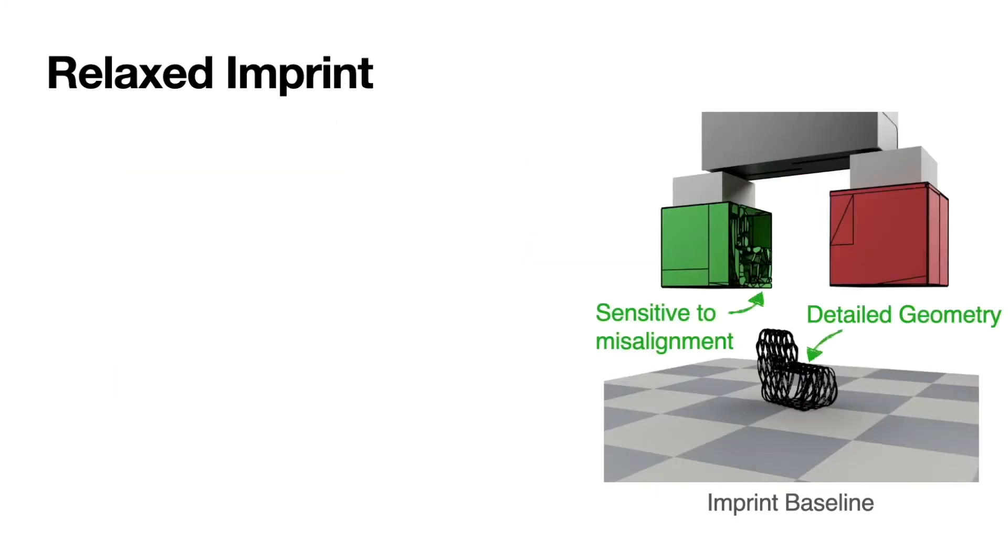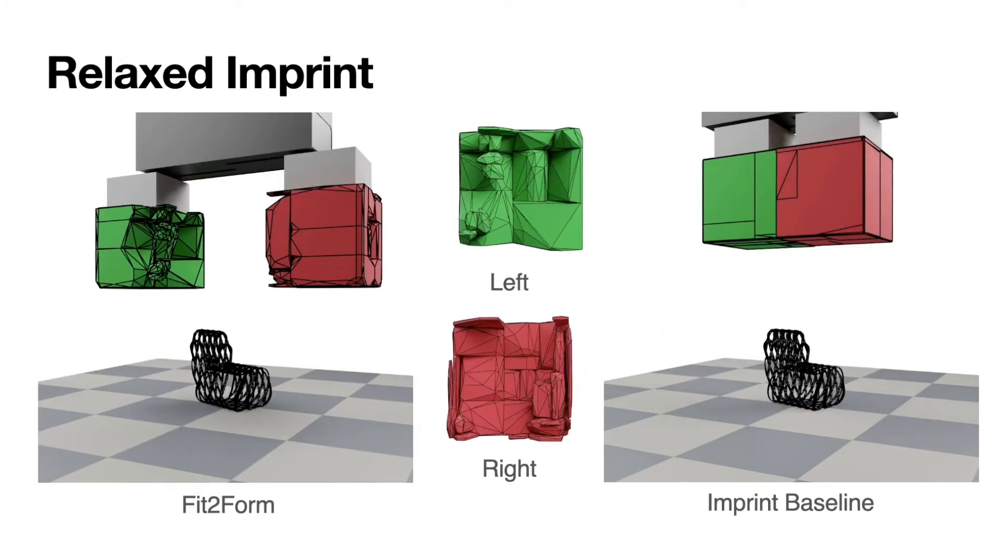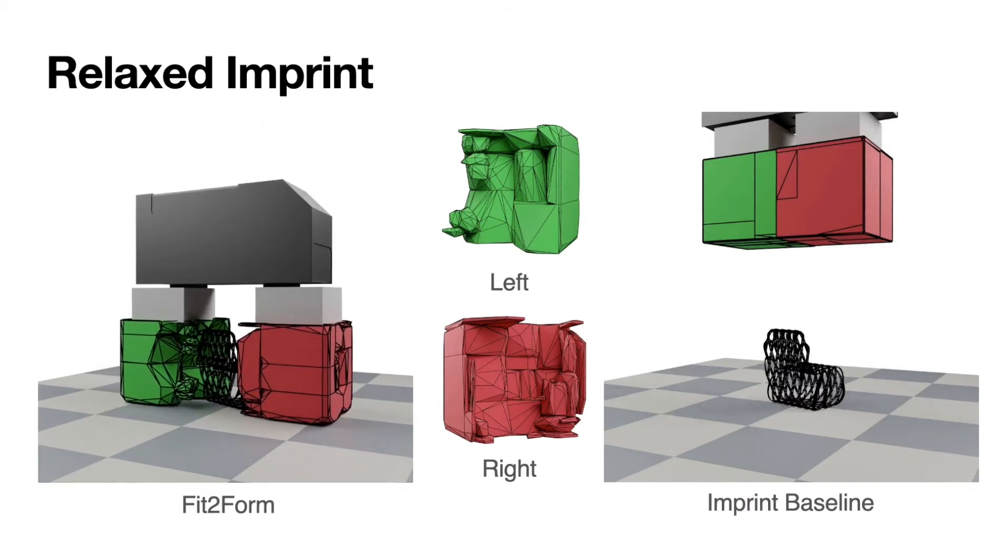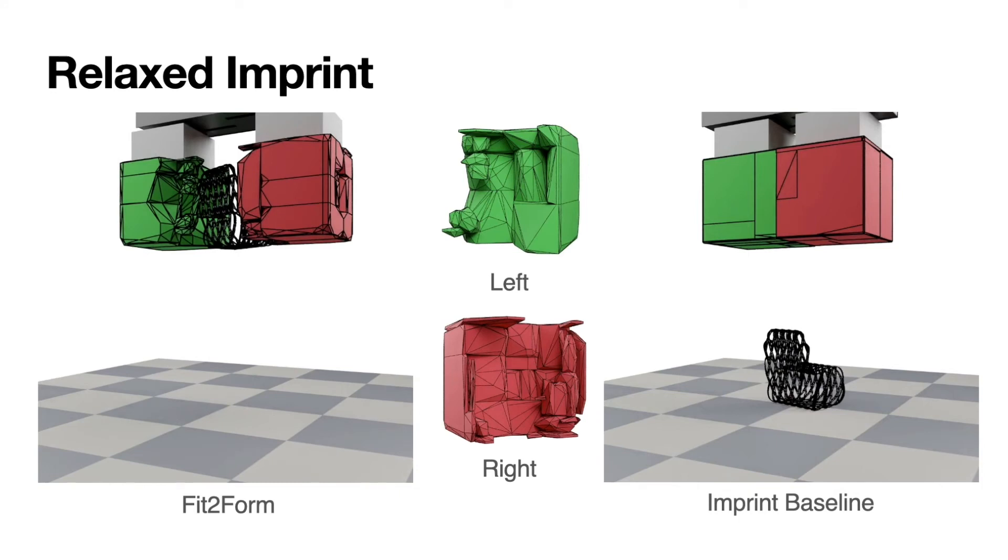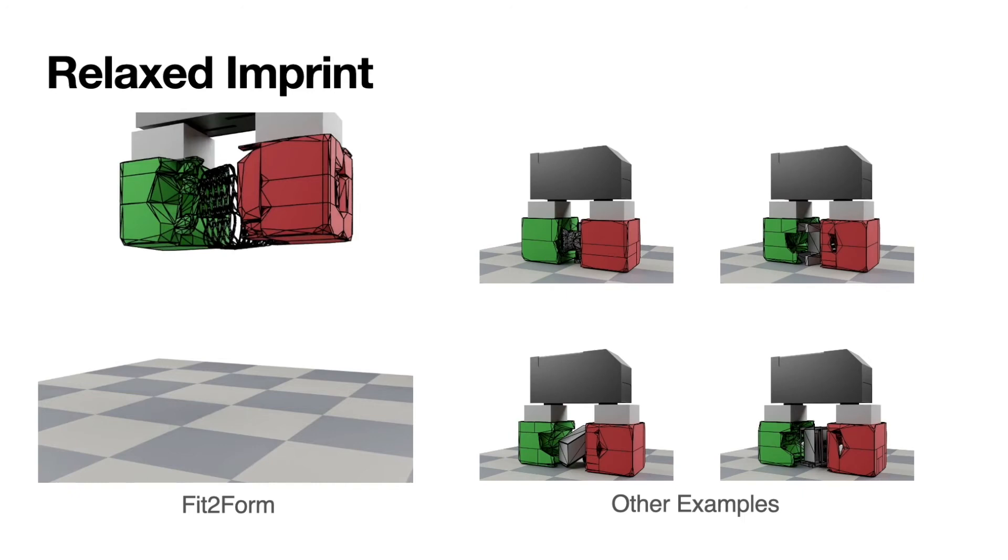For objects with detailed geometry, the imprint fingers are highly sensitive to misalignment and often fail to close in on the object properly. Fit2Form employs a relaxed imprint strategy, where the generated fingers form a closure around the object but also have some extra empty space for better robustness. Here we show a few more examples for the relaxed imprint strategy.